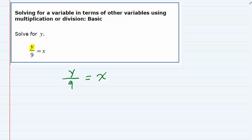So, to undo division, we do the opposite of division, which means we need to multiply this left-hand side by a 9.